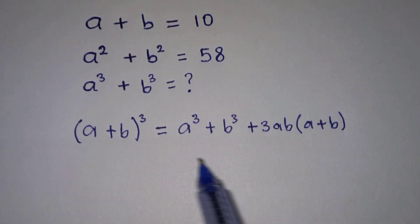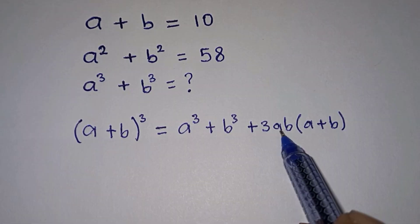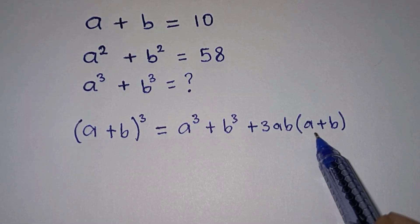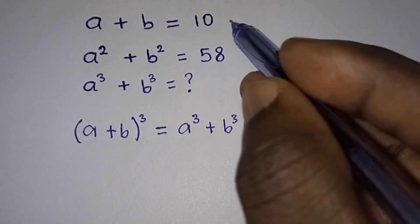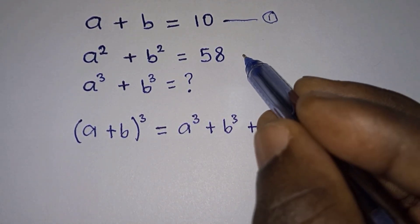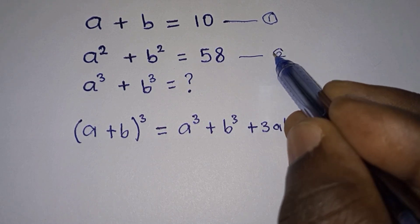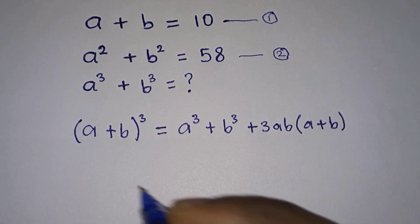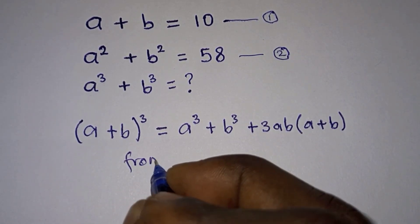If we know this identity the question is straightforward. What we need to do is figure out what ab is and what a plus b is, and then we are good to go. Let's call the first given equation equation one and the second equation equation two.